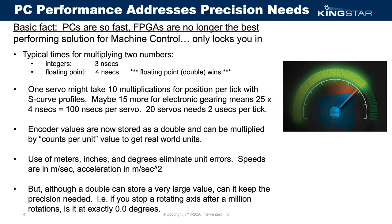The basic facts are that PCs are fast — you don't need FPGAs and DSPs anymore. Standard multi-core CPUs are as fast as you can imagine. Floating point numbers can be multiplied or divided in about four nanoseconds, and three nanoseconds for integers. For a servo calculation, maybe ten multiplications to produce the new position, fifteen more for electronic gearing — 25 calculations at four nanoseconds is only 100 nanoseconds per servo. So 20 servos might need just two microseconds of actual computation time per tick.